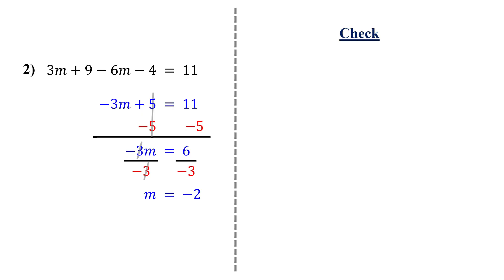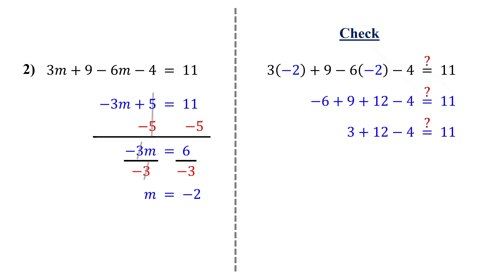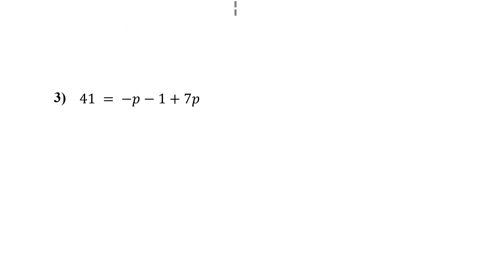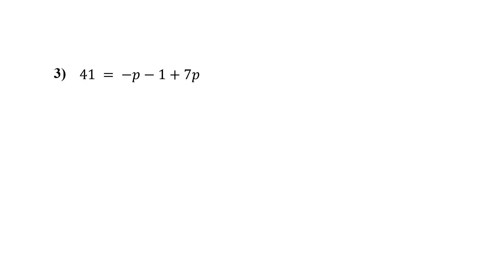To double-check, plug in negative 2 for m into the original equation and simplify. You can pause the video and go through it if you need to. Both sides match, so our solution is correct. Now what if the variable is on the right side of the equation? No worries — it doesn't matter which side the variable is on. We will solve it the same way.